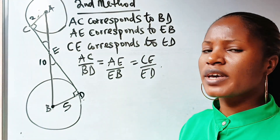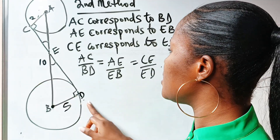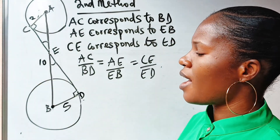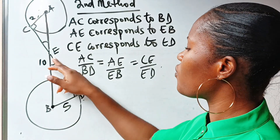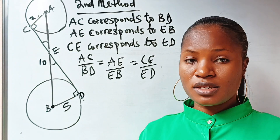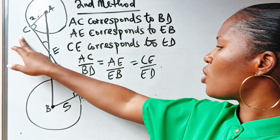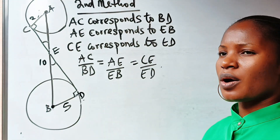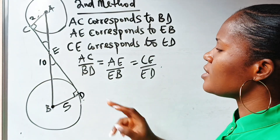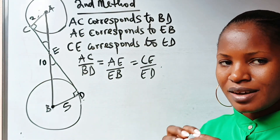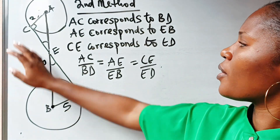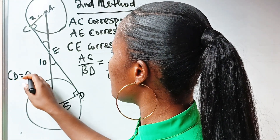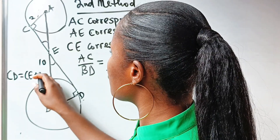We need to get the value of CD. This means that if we can get CE and ED, then we add the two together to get CD. So CD equals CE plus ED — everything we are doing now is trying to find CE and ED.